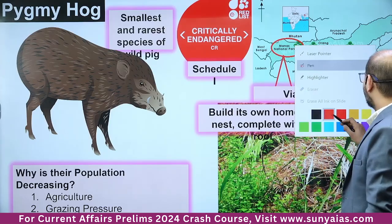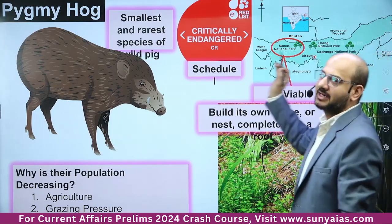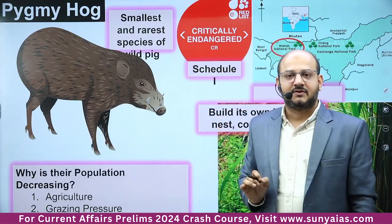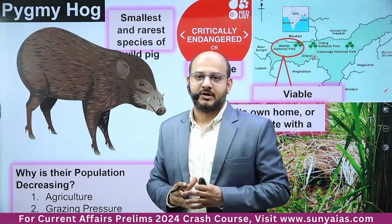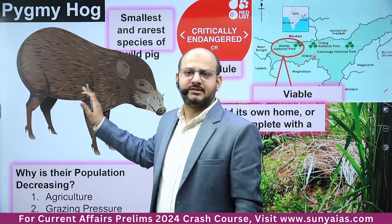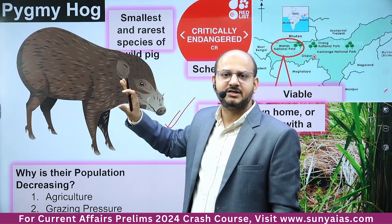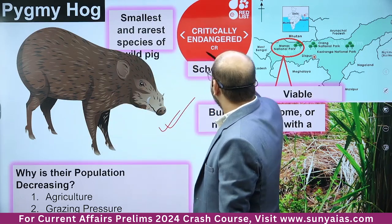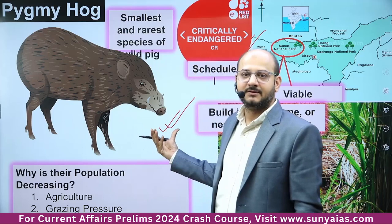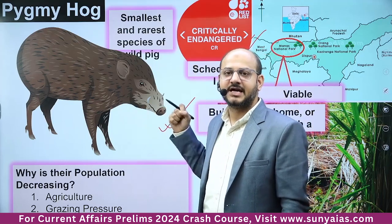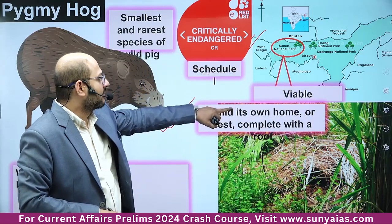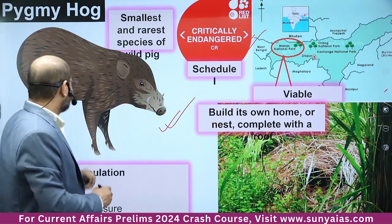Today we discuss the Environment and Ecology section. Some questions are directly coming from species — knowing the IUCN status and ecological importance. This is the Pygmy Hog. UPSC has asked questions on Pygmy Hog twice in the last 10 years and many times over 50 years. It is critically endangered, a subspecies of pig — very rare, very difficult to sight. The only viable population is in Manas National Park. It is a mammal.